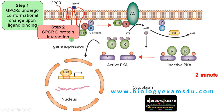Step 2: GPCR-G protein interaction. This conformational change causes the interaction of G proteins with the GPCR. G proteins are made up of three subunits: alpha, beta, and gamma. Recent studies suggest that these G proteins are located close to the GPCR.